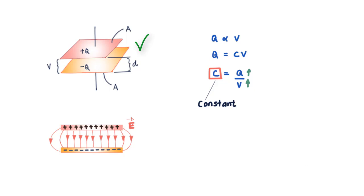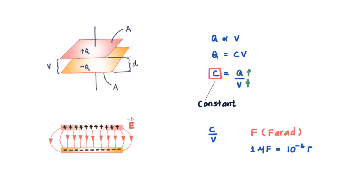Capacitance is the ability of a setup to carry charge for a given potential difference V. The units of capacitance are coulombs per volt, but rarely do we use this unit. Instead we use the farad: one coulomb per volt equals one farad. In actual practice, one farad is a very large unit, and we typically deal with microfarads and picofarads.